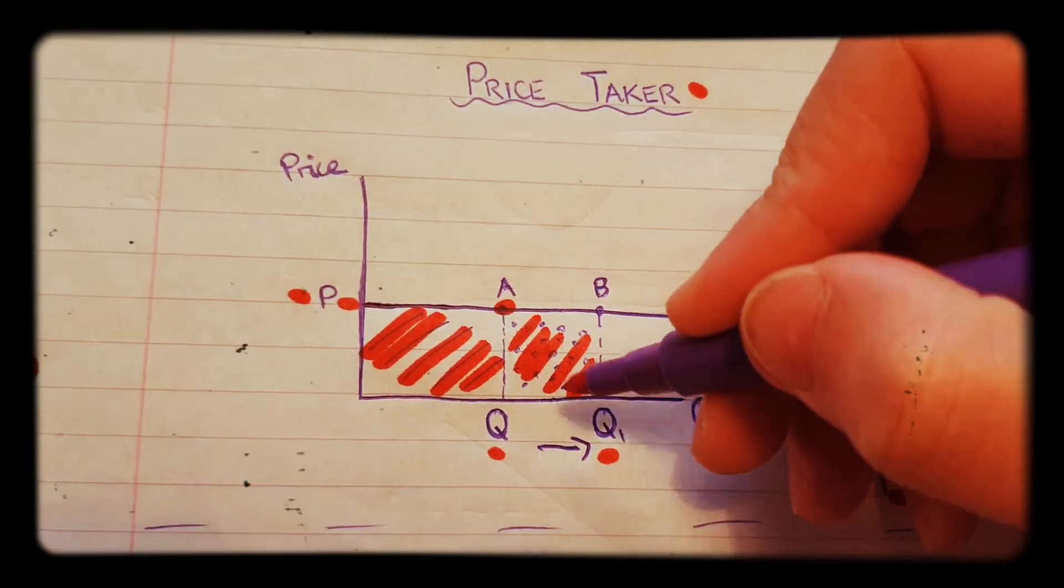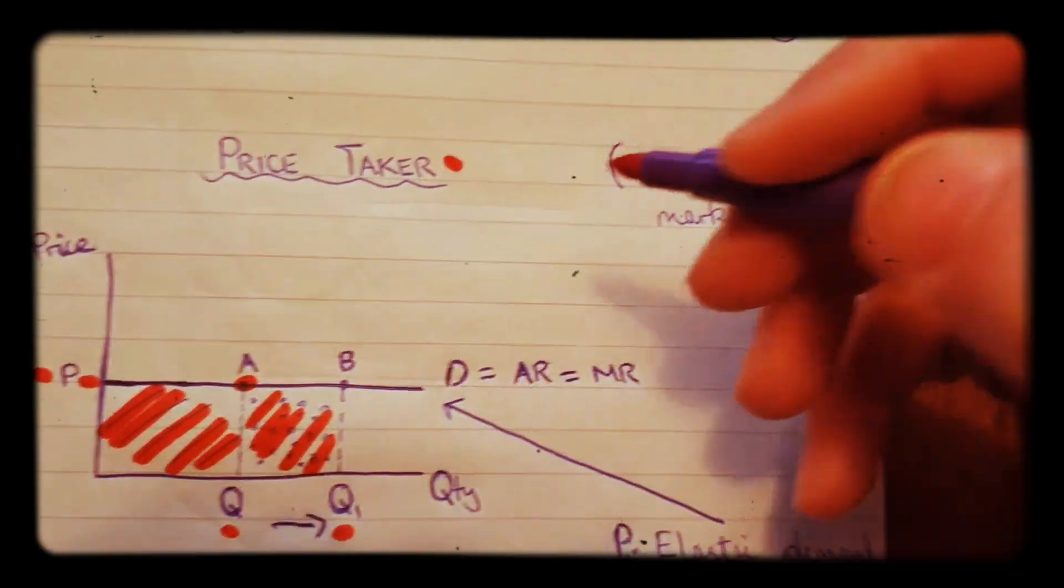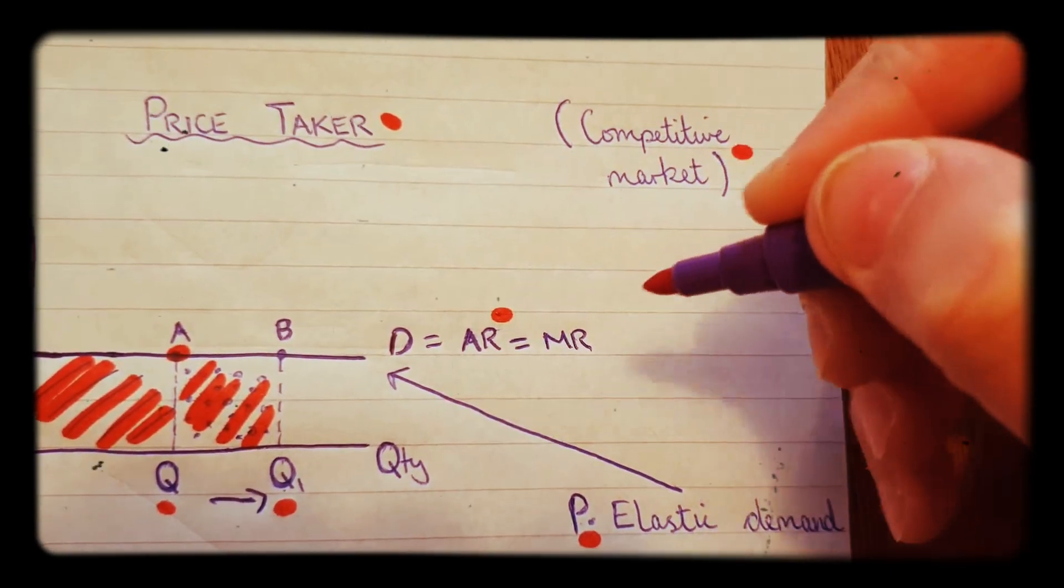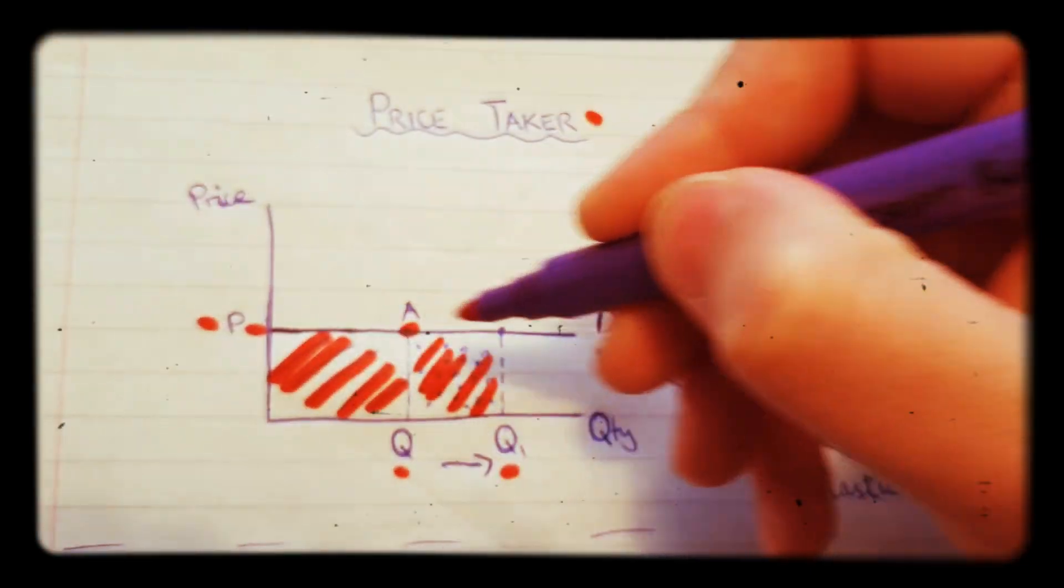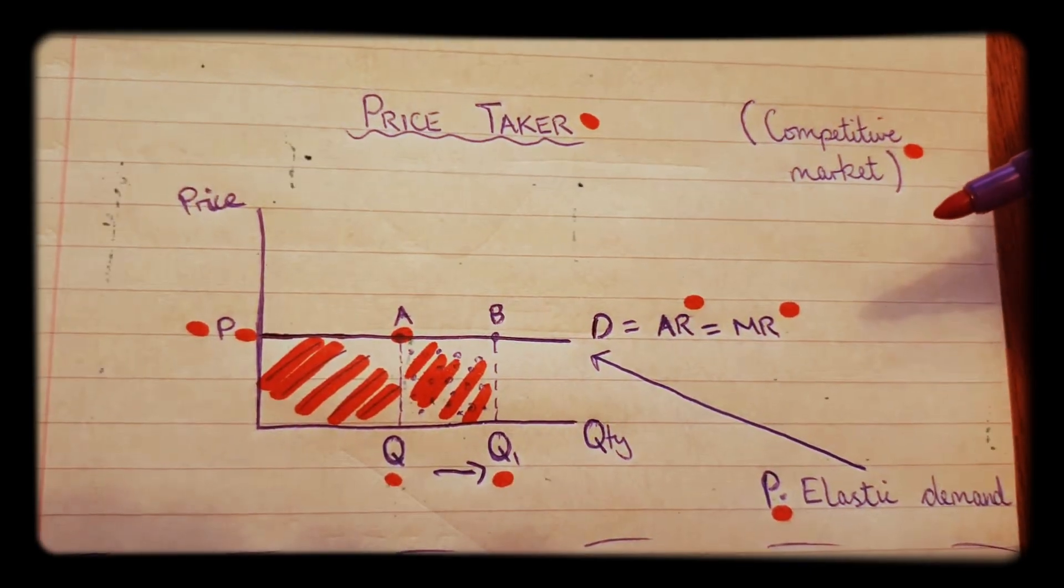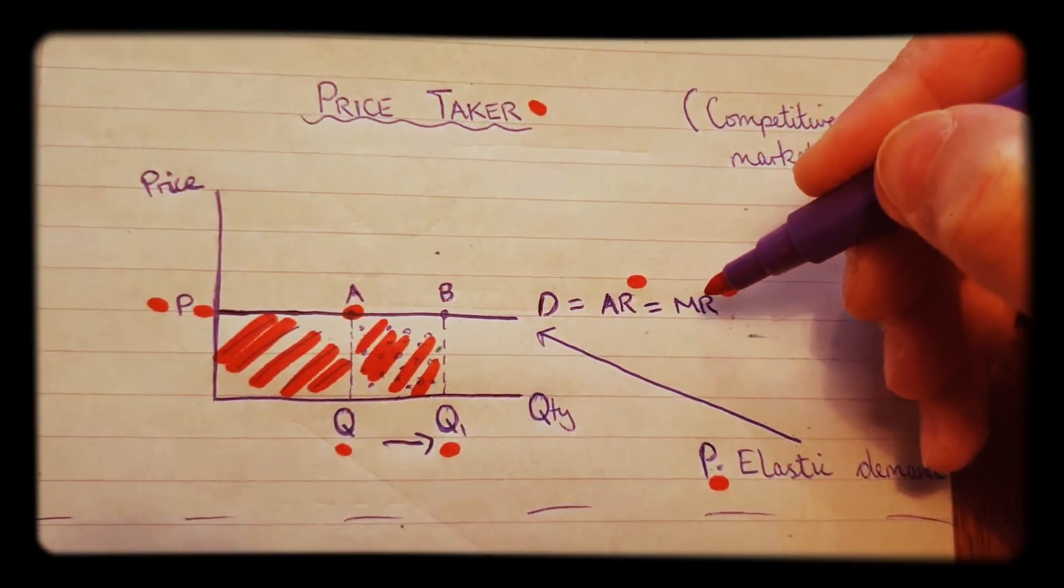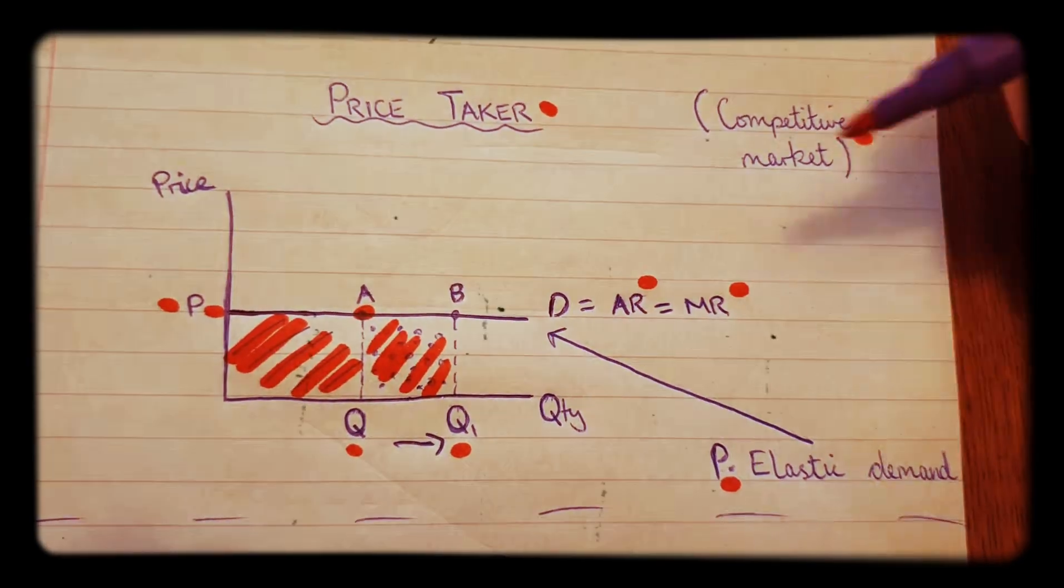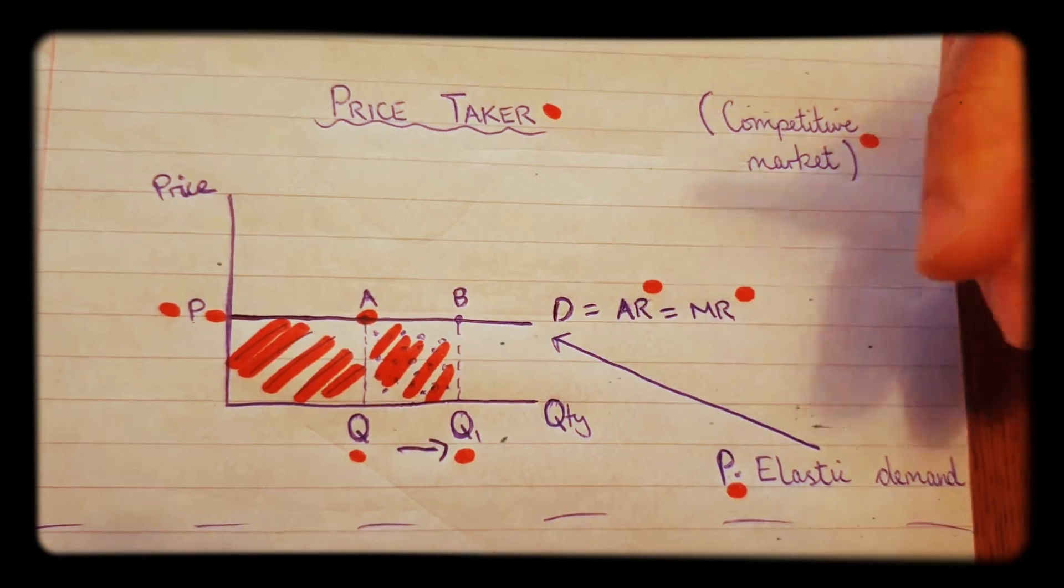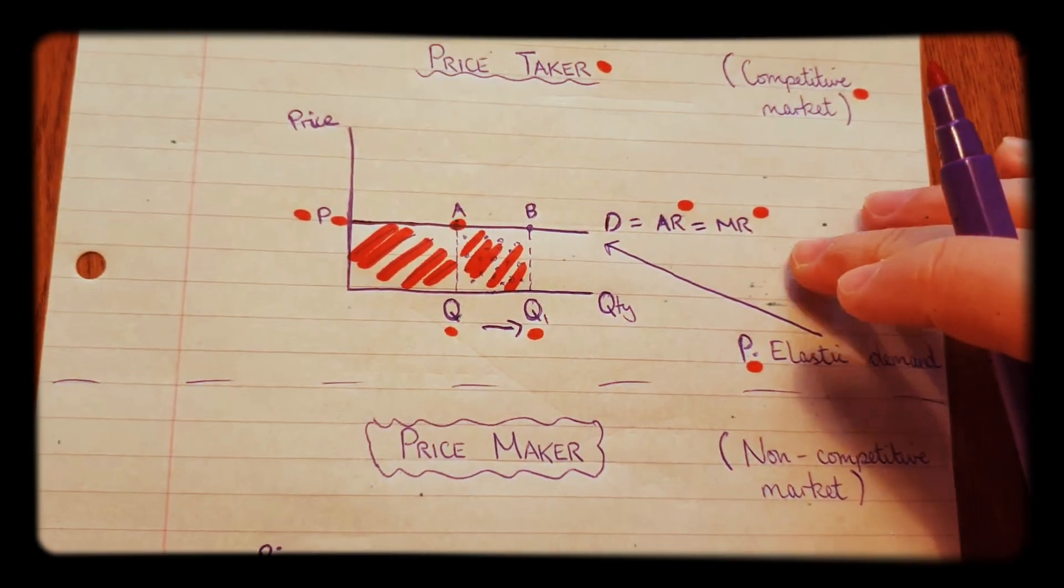So as the price doesn't change, you're just selling an extra unit. That means the average revenue, the price, is equal to the marginal revenue. So in this diagram, the horizontal demand curve, as you can see, average revenue equals marginal revenue. It's the same thing because there's no difference in price at different quantities.